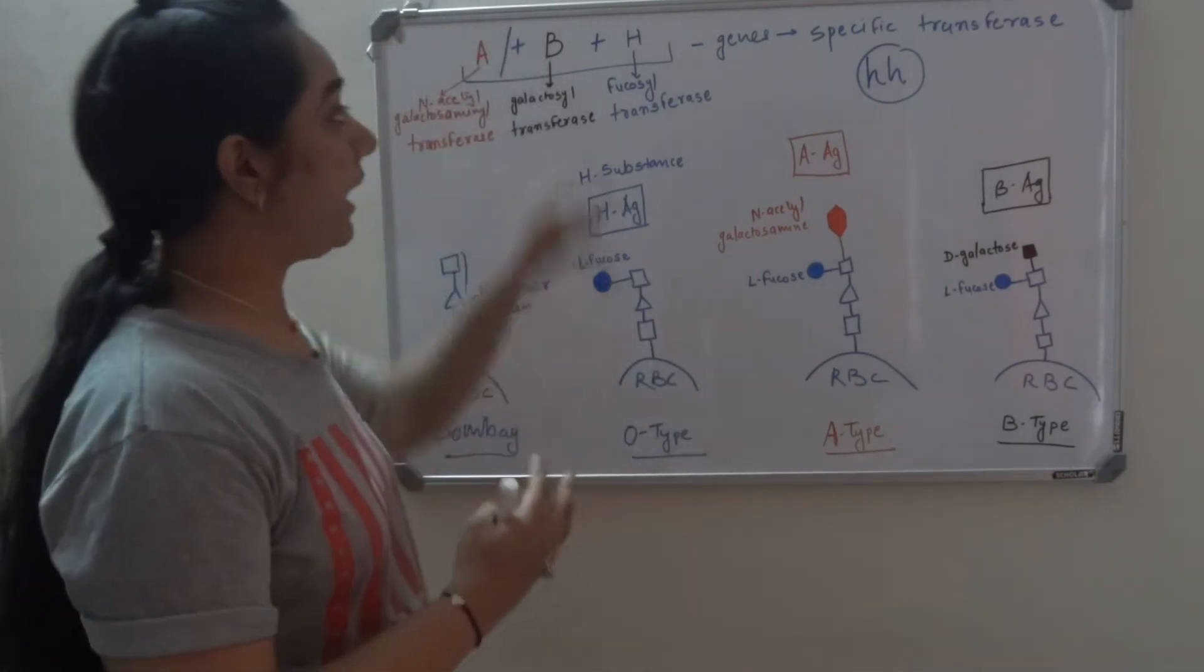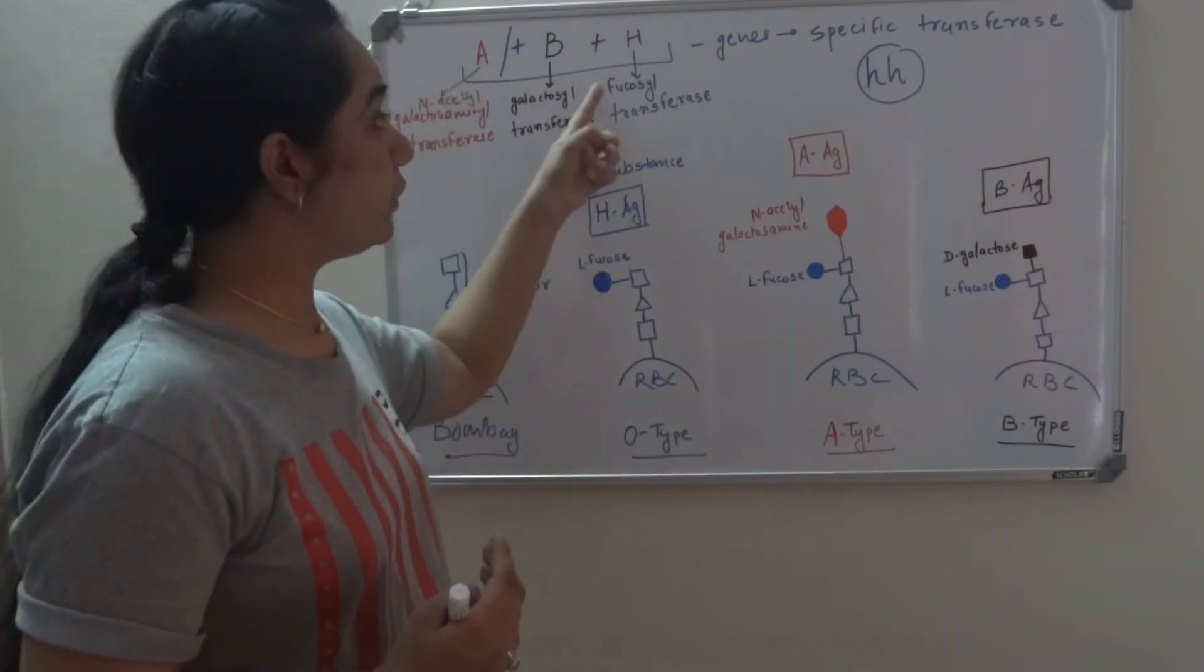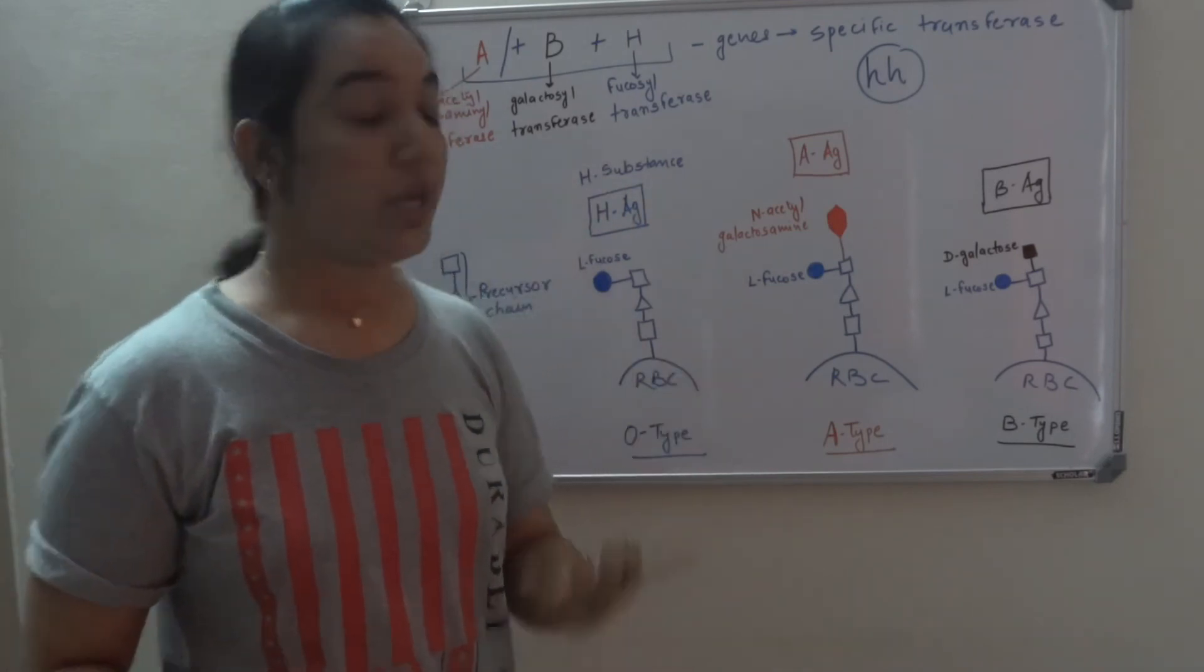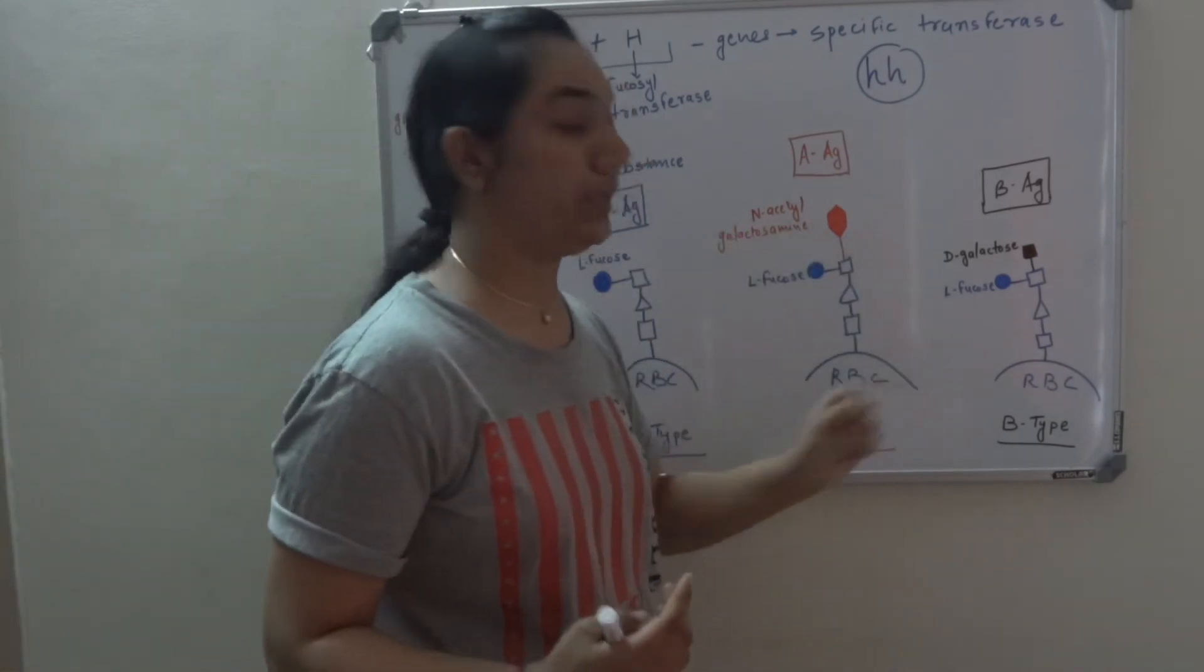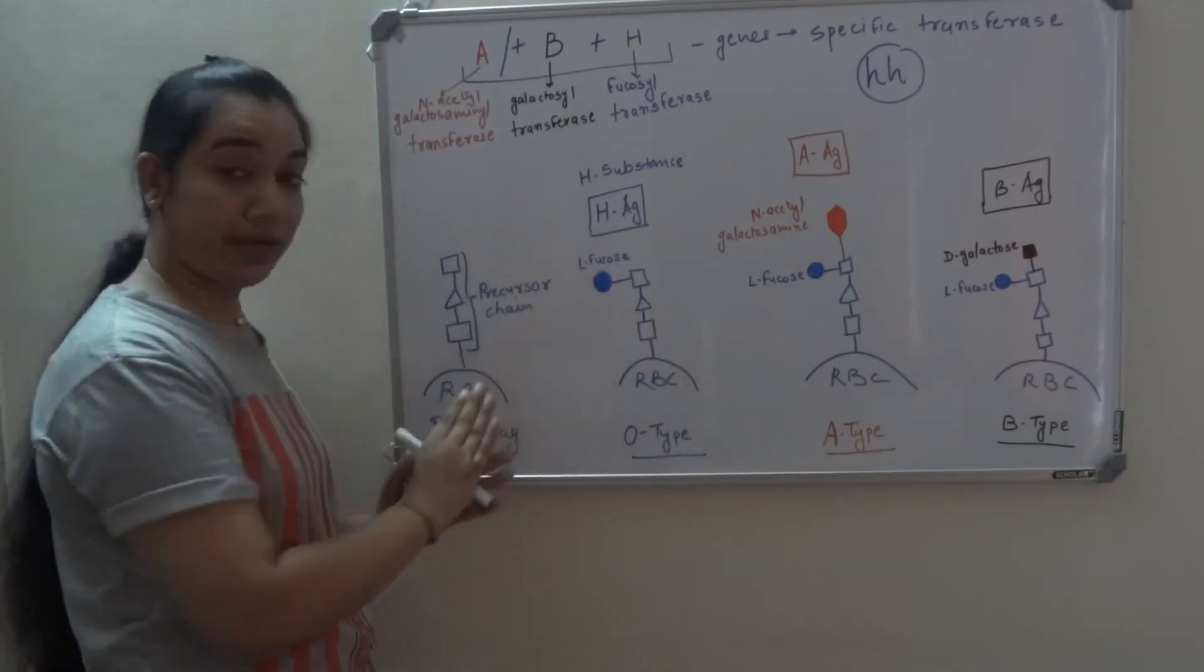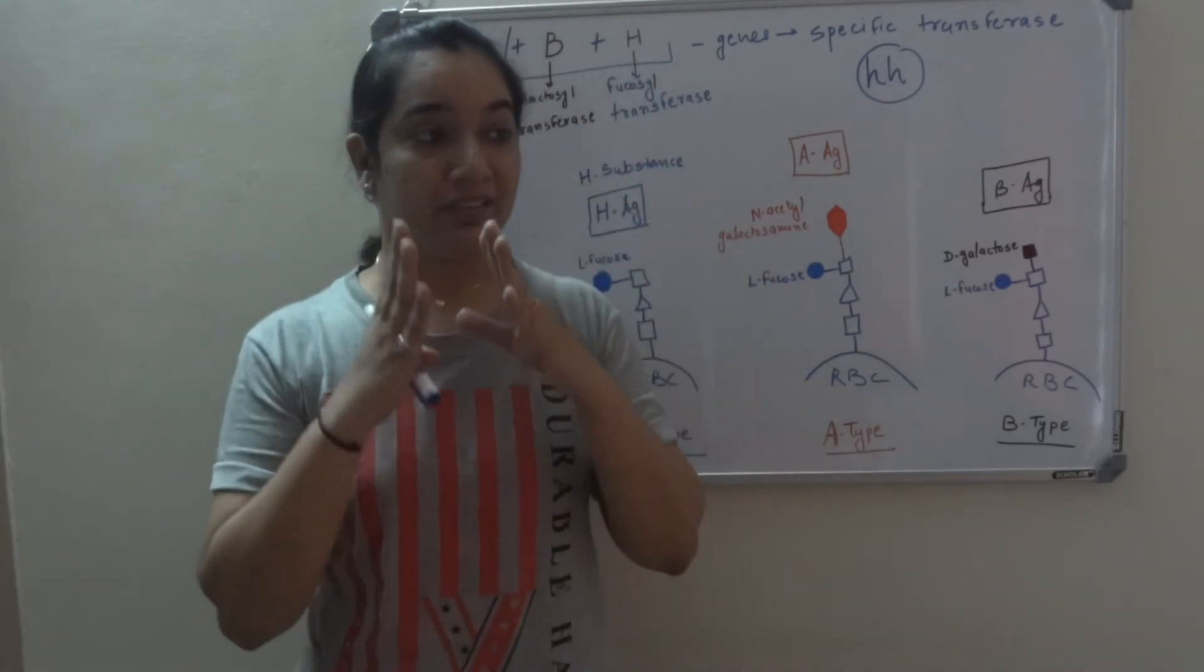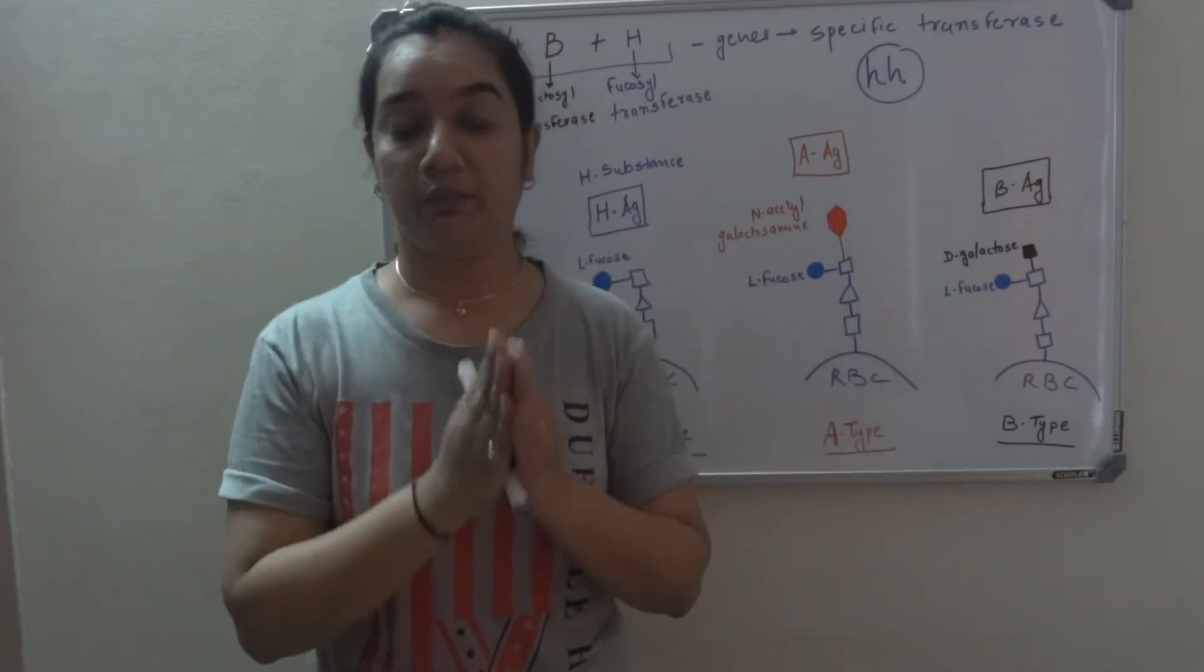An individual does not have functional H gene or the H gene is mutated. As a result, there is no fucosyl transferase, no transfer of L-fucose, no formation of H substance. If H substance is absent, the individual even though it has A or B gene cannot add carbohydrate moiety to the RBC. And thus it has only RBC with precursor chain because it has no antigen, individual will produce antibody against H antigen, A antigen and B antigen. And that is why it is very important when blood transfusion has to happen for Bombay blood group, it has to be amongst Bombay blood group only.